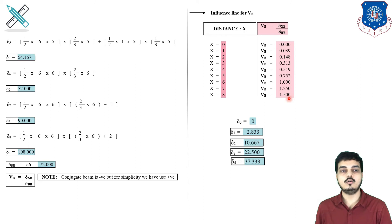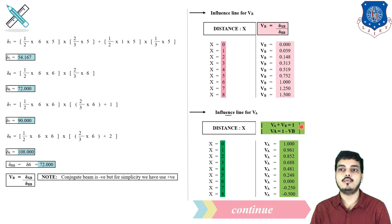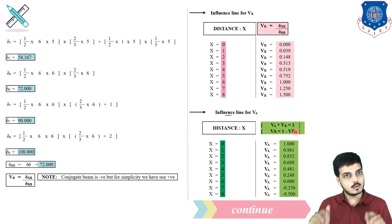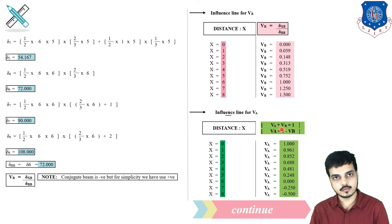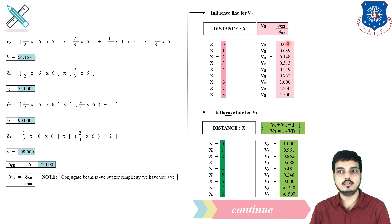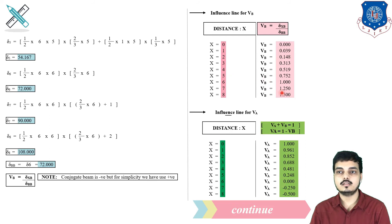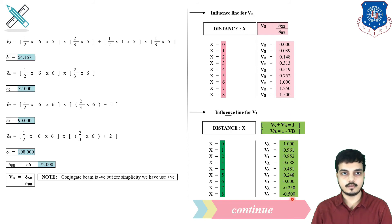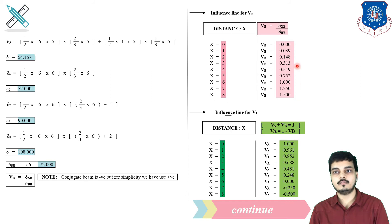Next we find the ILD for VA. Using equilibrium: upward reactions VA + VB = 1, so VA = 1 − VB. Subtracting each VB value from 1: at x=0, VA=1; at x=1, VA = 1 − 0.039; at x=6, VA = 1 − 1 = 0; at x=7, VA = 1 − 1.25 = −0.25; at x=8, VA = 1 − 1.5 = −0.5.